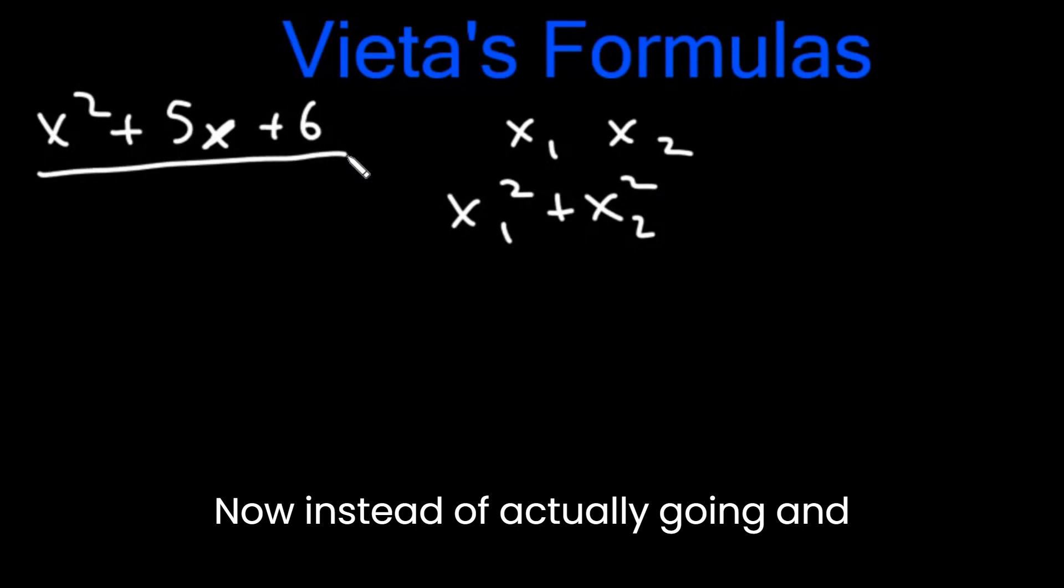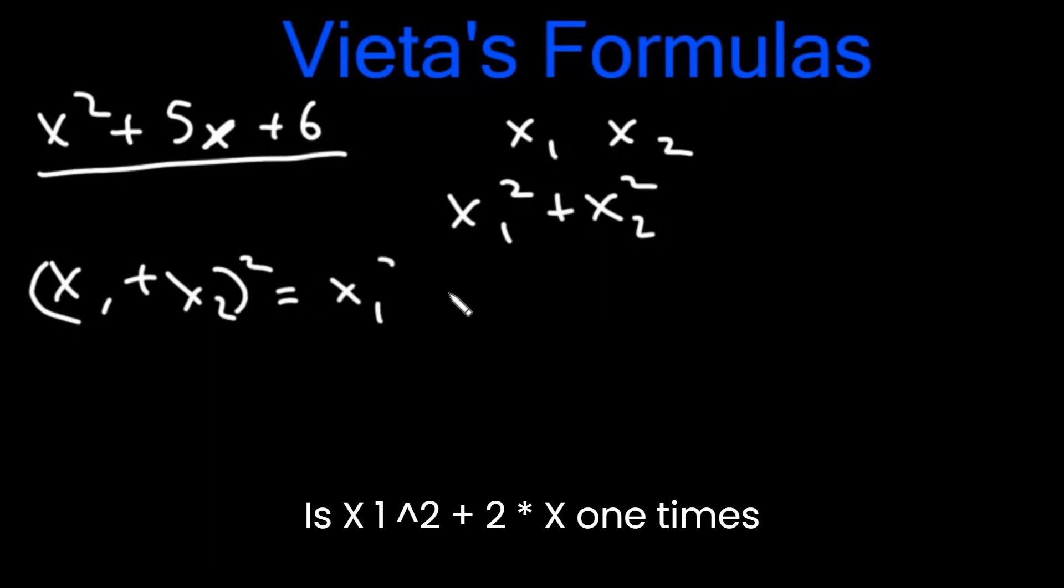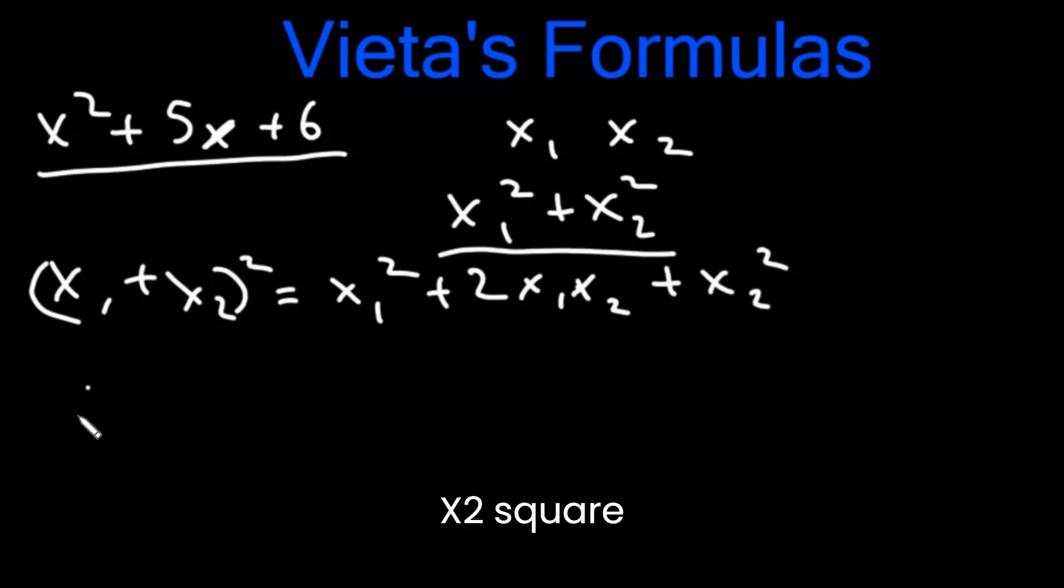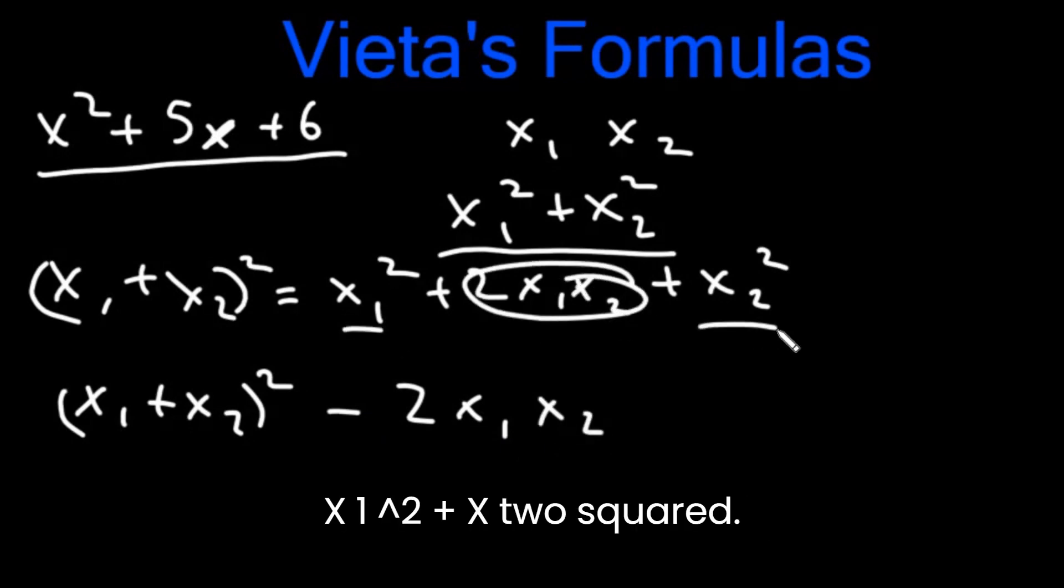Instead of actually going and finding all of that, we can just use Vieta's formulas. We know x1 plus x2 square is x1 square plus 2 times x1 times x2 plus x2 square. So x1 square plus x2 square will be x1 plus x2 square minus 2x1x2. Because if we remove this, we'll get just x1 square plus x2 square.